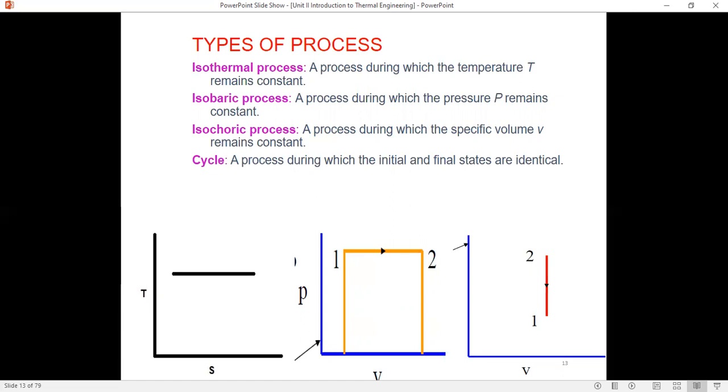The isochoric process is one during which the specific volume remains constant. If the specific volume of that system remains constant, it is an isochoric process.